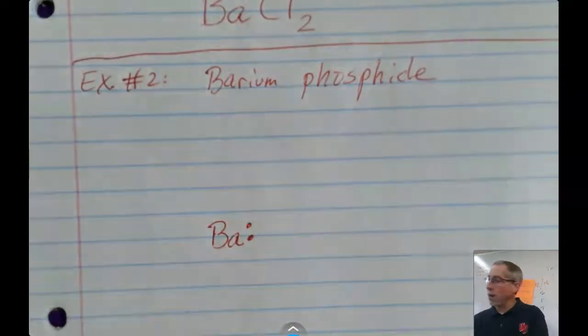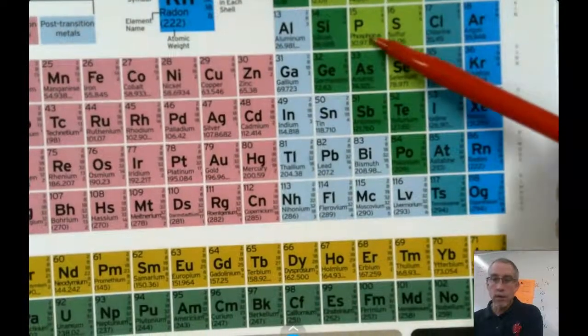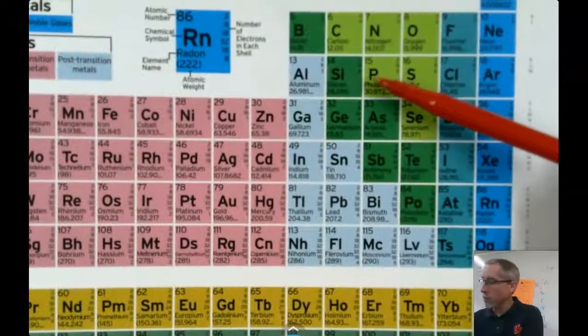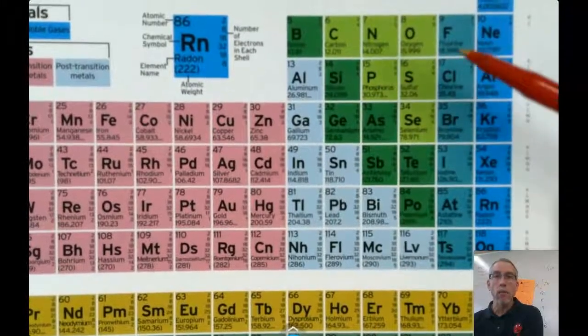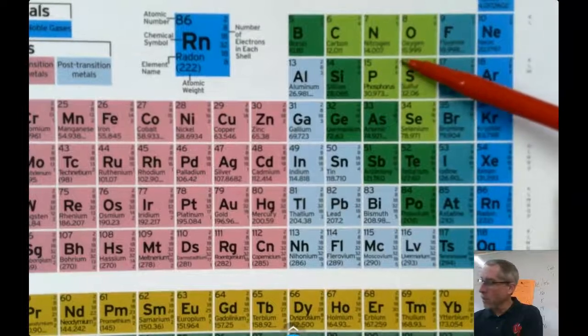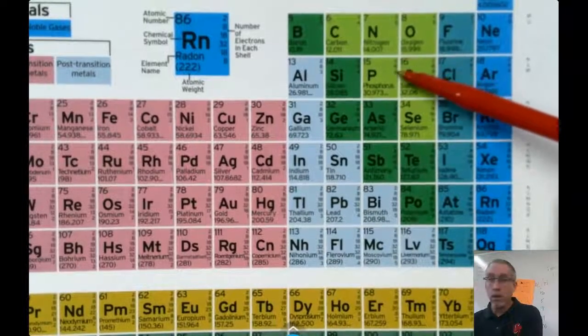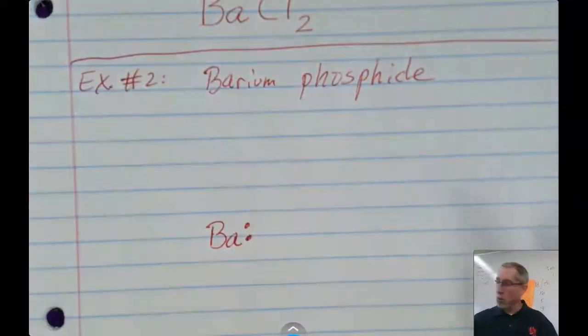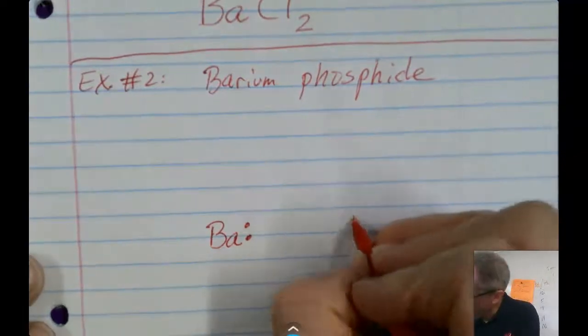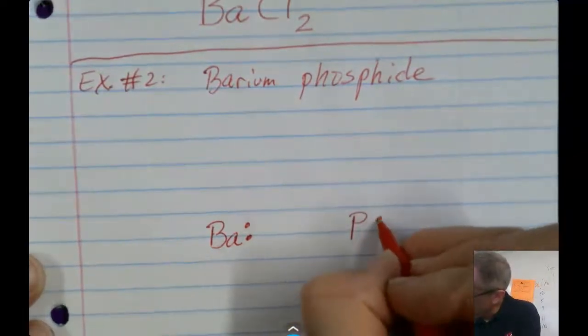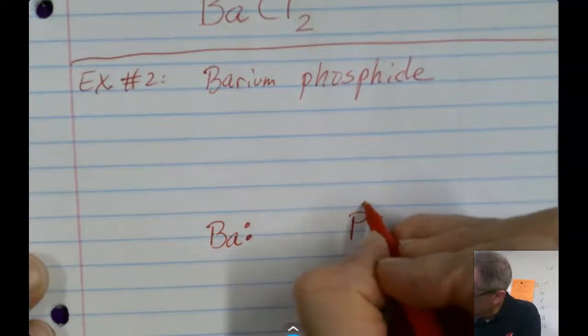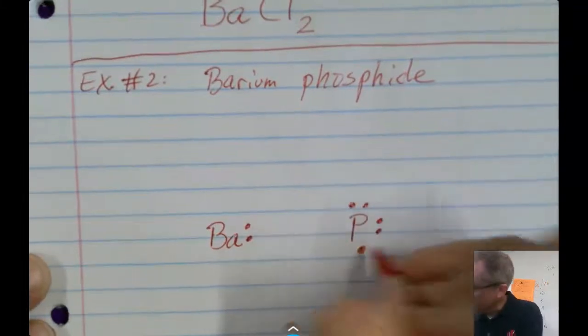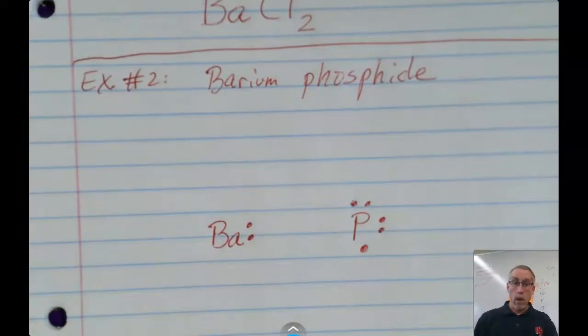So there's its two outer electrons. But this time we're going to bond it with a phosphorus atom. Remember we changed the name phosphorus to phosphide when it's in an ionic compound. And its electrons are at 2, 8, 5. So I need to draw five outer electrons. So I'll draw one, two, three, four, five.